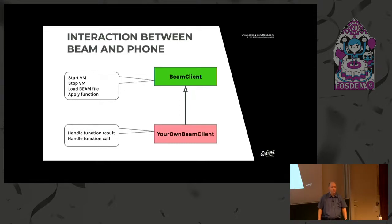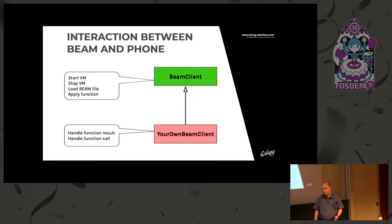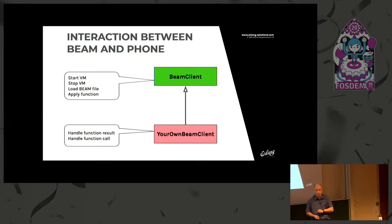The Beam client is partially implemented in the VM itself, so you get a Beam client class which provides the basic functionality, like starting and stopping the VM, loading the Beam file, and applying custom functions which are basically translated into Erlang function calls. What you need to implement yourself is to provide input for which functions and which arguments to apply, provide a way to handle the results of your function calls, and also implement callbacks for custom function calls from inside the VM to the outside world — to Android.